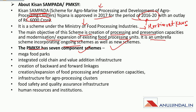It is an umbrella scheme incorporating ongoing and new schemes. The seven component schemes under PM Kisan Sampada Yojana are: mega food parks, integrated cold chain and value addition infrastructure, creation of backward and forward linkages, creation or expansion of food processing and preservation capacities, infrastructure for agro processing clusters, food safety and quality assurance infrastructure, and human resources and institutions.